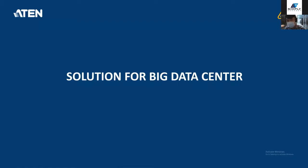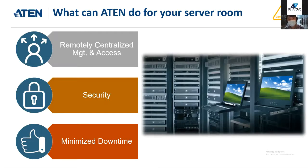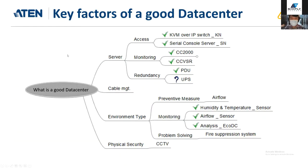Moving to the solution for big data centers — what can ATEN do for your server room? First, remotely centralized management and access: manage all your systems from one software dashboard. Next is security with several layers, including IP blacklisting, third-party authentication, and CC2000 authentication, helping minimize downtime through quick remote server access. Key factors of a good data center include access to servers, monitoring and redundancy, cable management, and environment monitoring for humidity, temperature, airflow, and analysis.